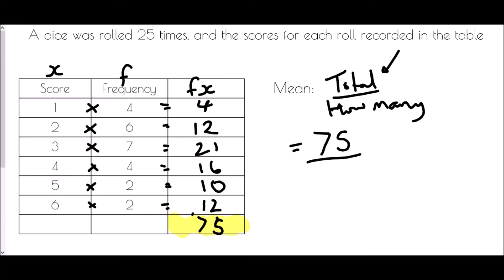For the mean we need 75 on top, and we divide by how many — how many rolls of the dice were there? We were told 25, and that value is also confirmed by totalling the frequency column: four plus six is 10, then 17, 21, 23, 25 — it matches. So the mean is 75 divided by 25, which is three.